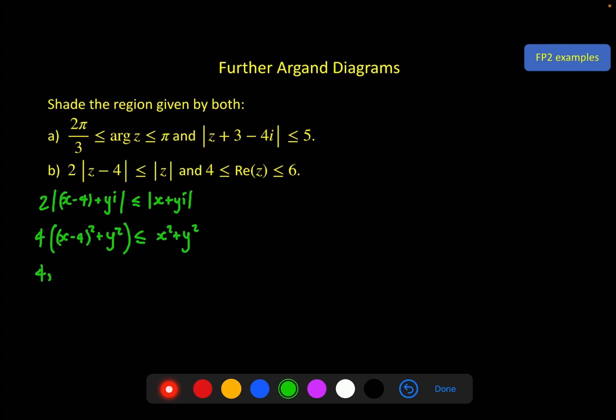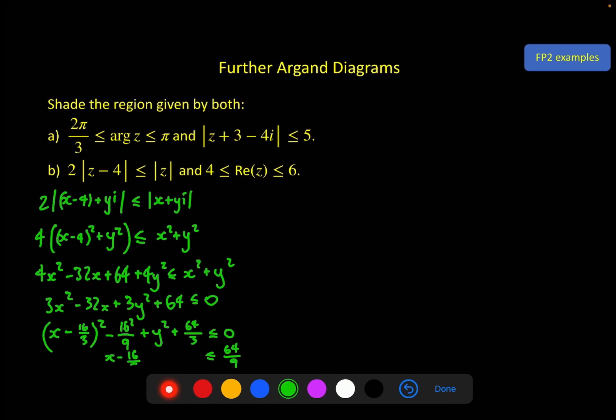Expanding these brackets out, we get 4x squared minus 32x plus 64 plus 4y squared is less than or equal to x squared plus y squared. And that gives us 3x squared minus 32x plus 3y squared plus 64, less than or equal to 0. Not the nicest numbers in the world. If we divide everything by 3, it gives us some fractions. We get x minus 32 over 3, and then divided by 2 gives us 16 over 3 minus 16 squared over 9 plus y squared plus 64 over 3, less than or equal to 0. And those numbers combine to give 64 over 9.